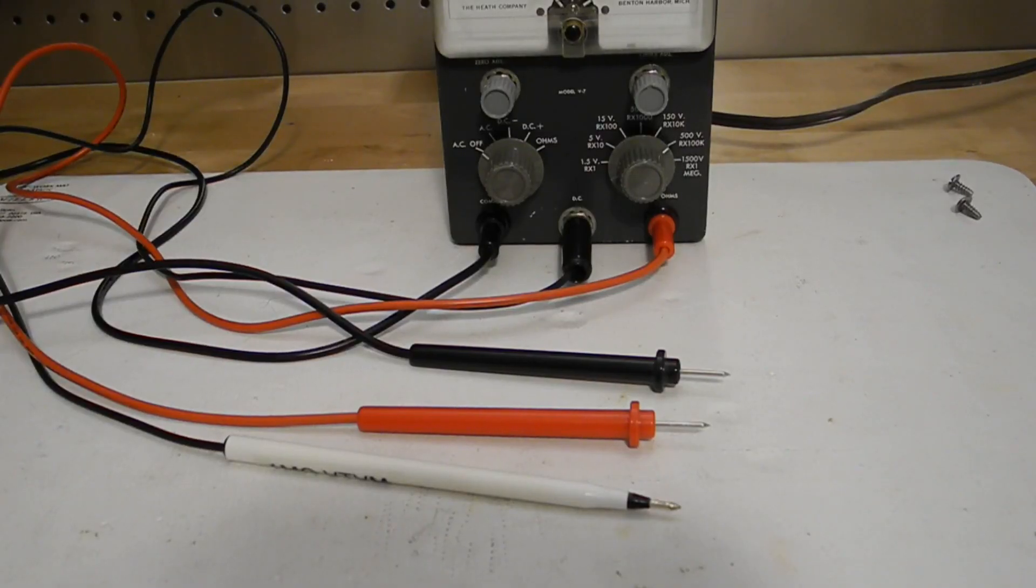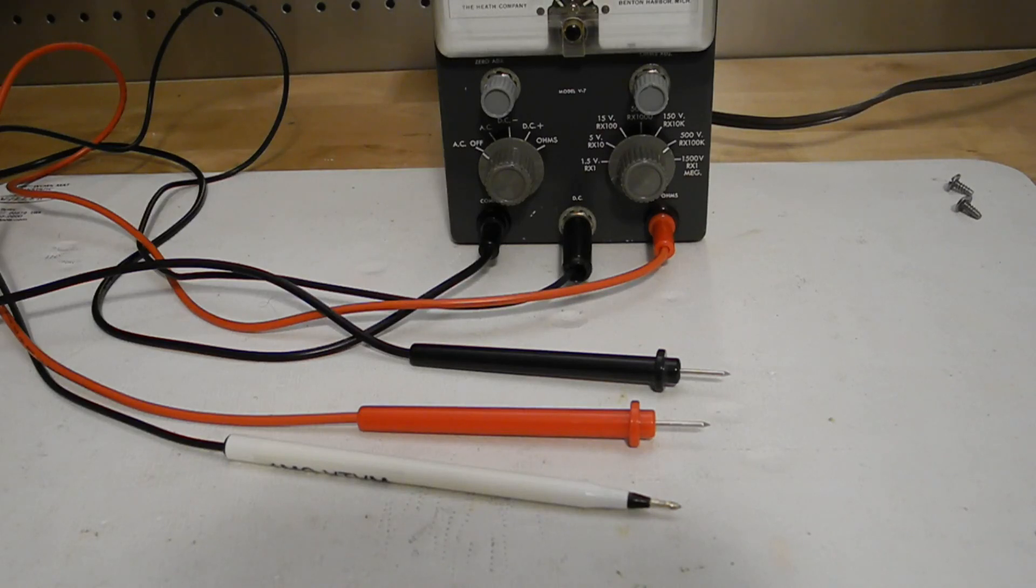It was also missing the test leads. I had some standard leads with banana jacks that I could use for DC and ohms, but for the AC input, the unit requires the shielded lead with 1 megohm resistor. I made a test lead using some coax cable, phone jack, and made a test probe using the case of a pen with a resistor inside.